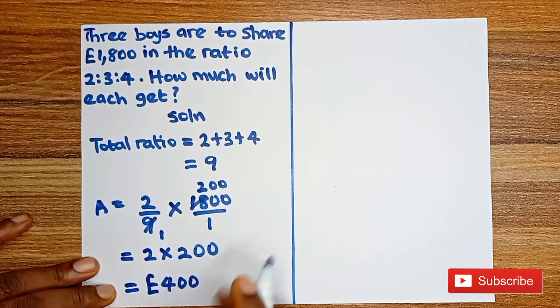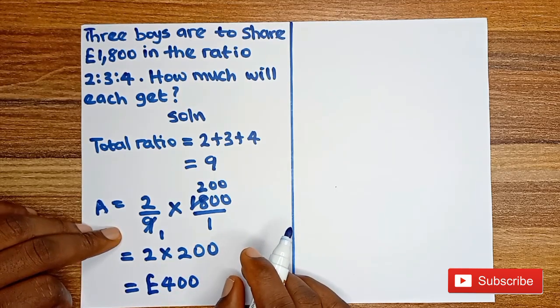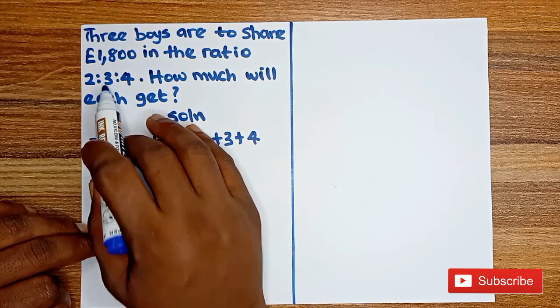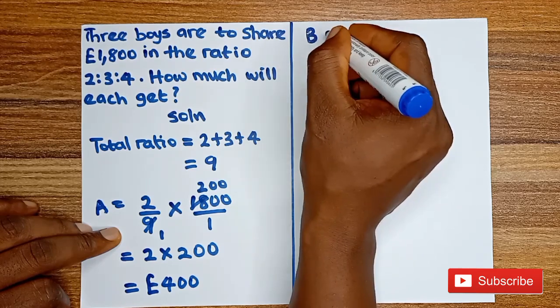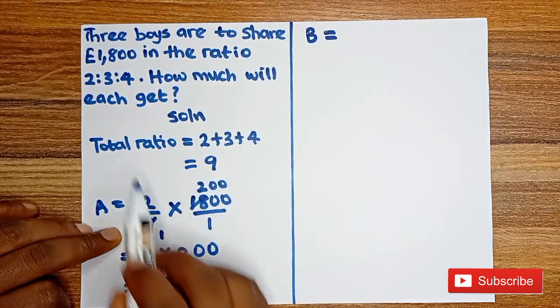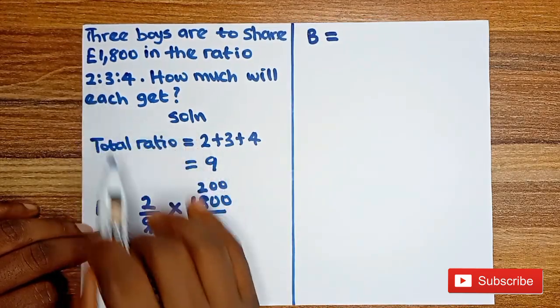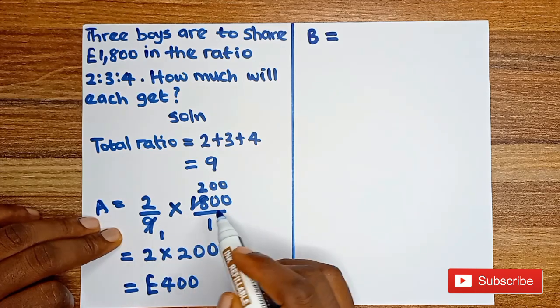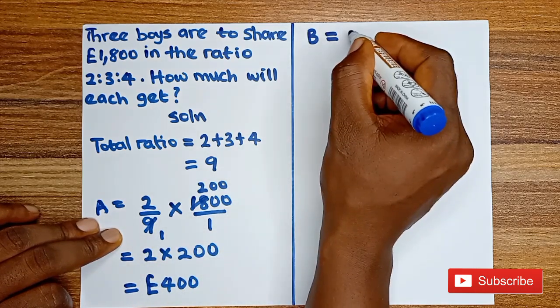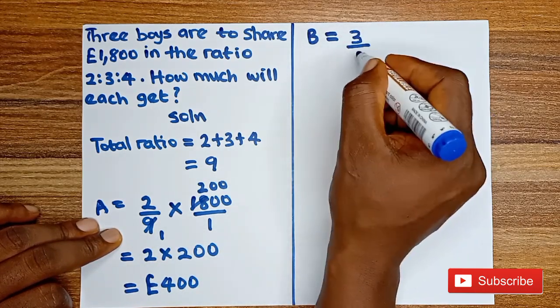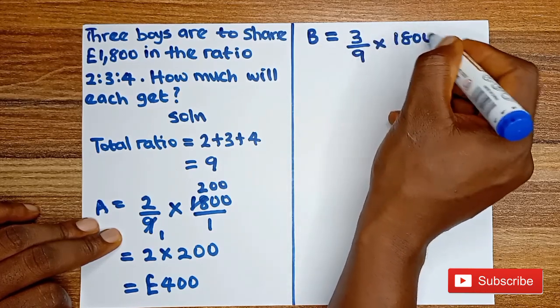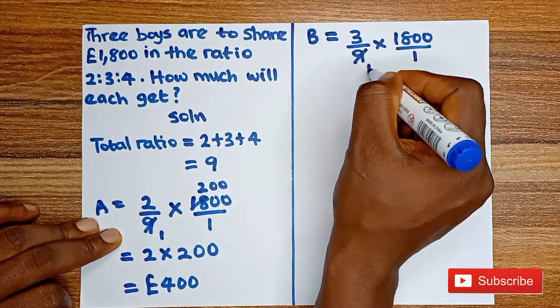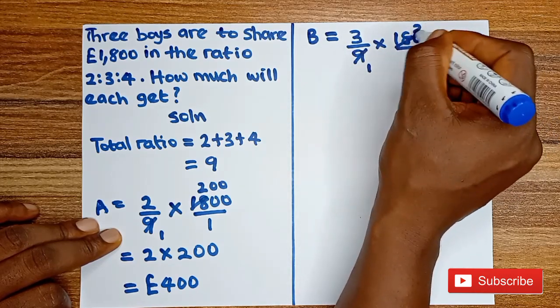Now we go to Boy B with a ratio of 3. We are going to divide his ratio by the total ratio, multiplied by the amount to be shared. So we have 3 over 9 multiplied by 1,800 over 1. 9 here, 1, 9 here, 200.